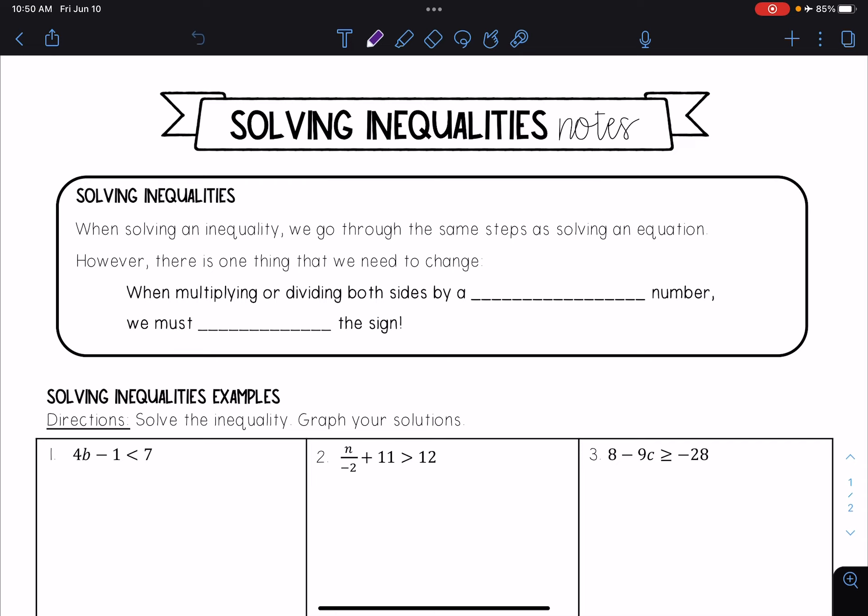However, there is one thing that we need to change and something that we make sure we don't forget, and that is when we're multiplying or dividing both sides by a negative number, we must flip the sign.